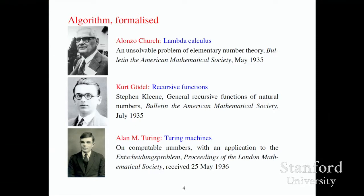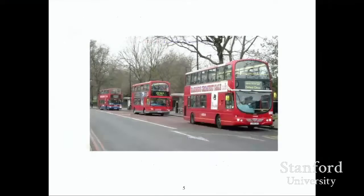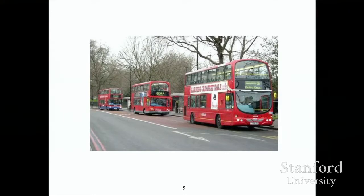It's like buses. You wait 2,000 years for a formal theory of computability and then three come along at once. So why did this happen?